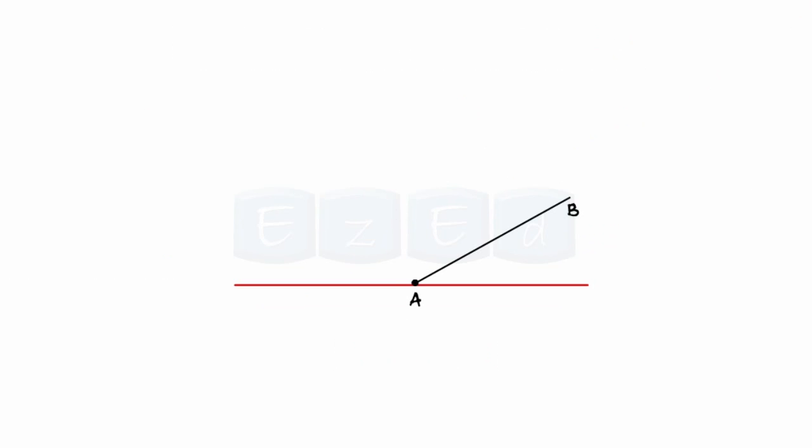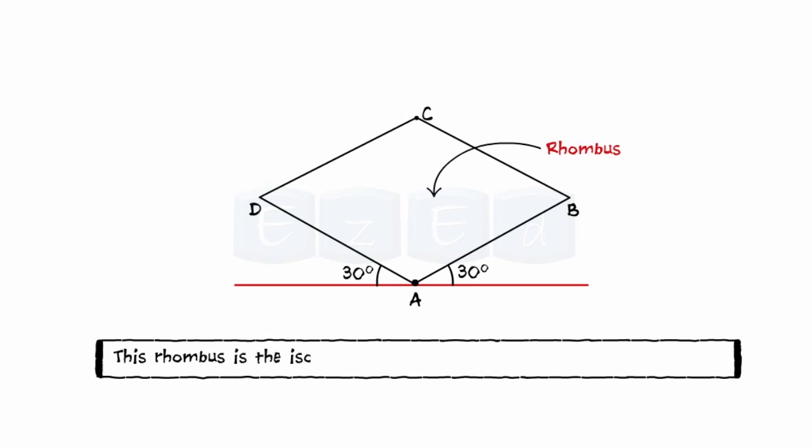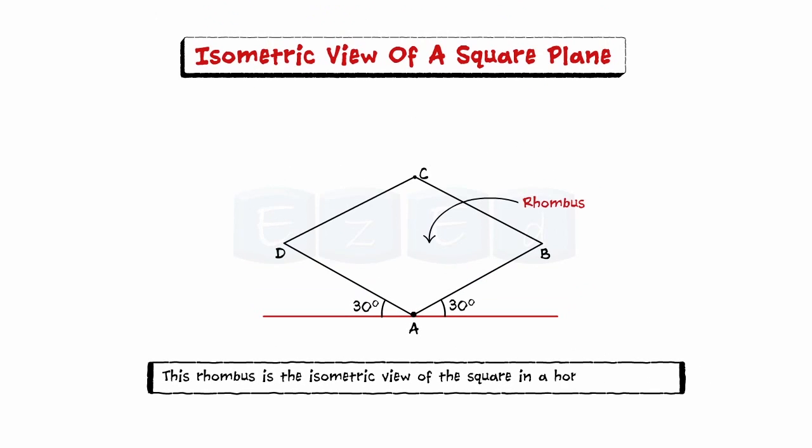Let us draw the isometric view of a square plane. Draw a horizontal reference line and from any point draw the sides AB and AD inclined at 30 degrees. Now from points B and D draw arcs and mark point C and join the lines BC and CD. This rhombus is the isometric view of the square in a horizontal plane.